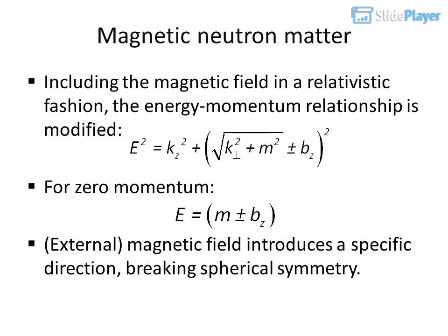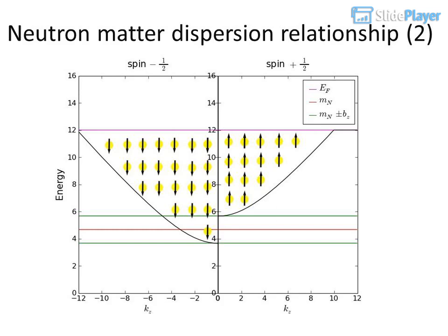Magnetic neutron matter: including the magnetic field in a relativistic fashion, the energy-momentum relationship is modified for zero momentum. The external magnetic field introduces a specific direction, breaking spherical symmetry, giving the neutron-matter dispersion relationship.